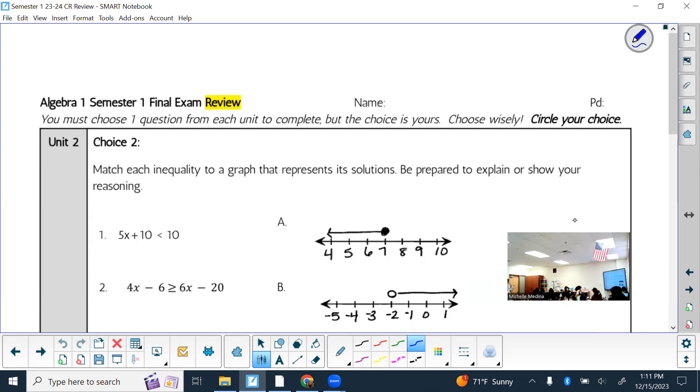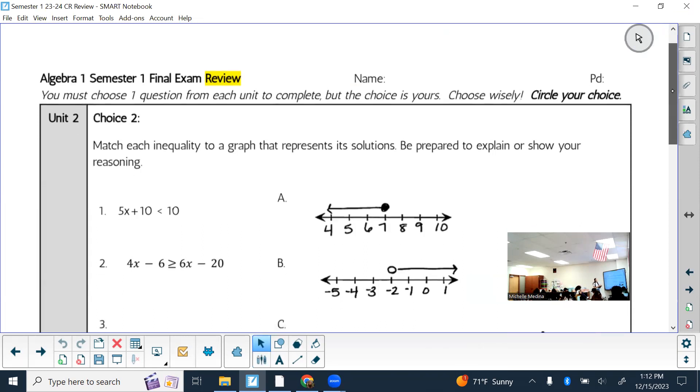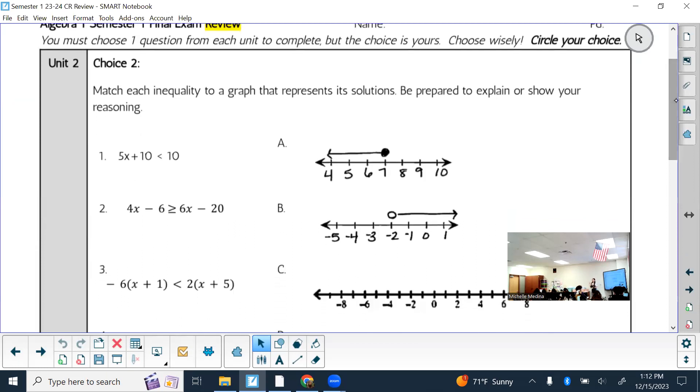All right, but the first one, 5x plus 10 less than 10. When we're solving inequalities or equations, what are we actually trying to do? Whenever I'm solving an inequality or an equation, what am I trying to figure out? Okay, and what would the solution be? What are the solutions when we talk about inequalities in this case? Okay, well, maybe let me ask you this. If I made this inequality an equal sign, then can you tell me how to solve that?